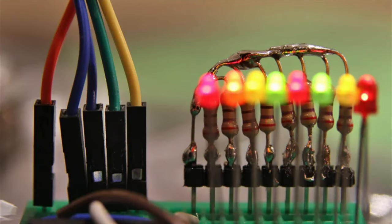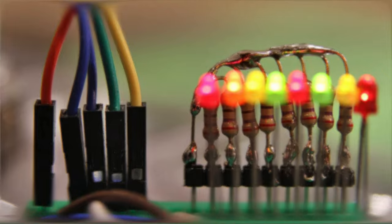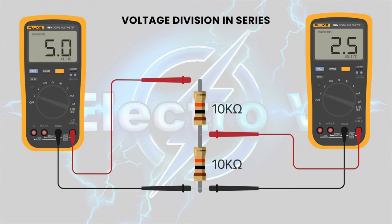Here are some common uses of resistors. Voltage division: resistors are frequently employed to create voltage dividers in circuits. By placing resistors in series or in a voltage divider configuration, a fraction of the input voltage can be obtained at the junction between the resistors. This is valuable in sensor circuits, biasing circuits, and more.